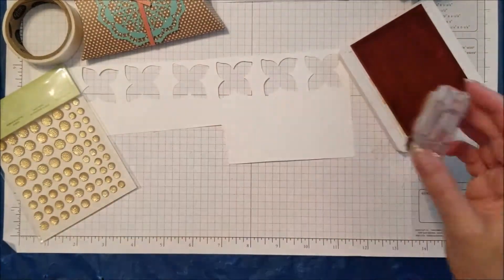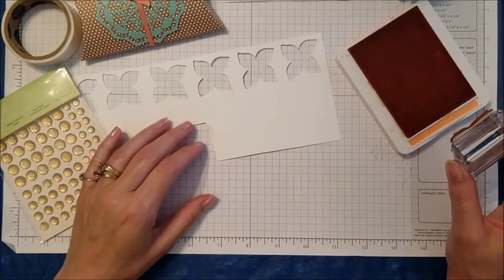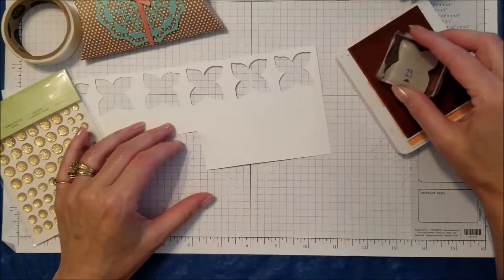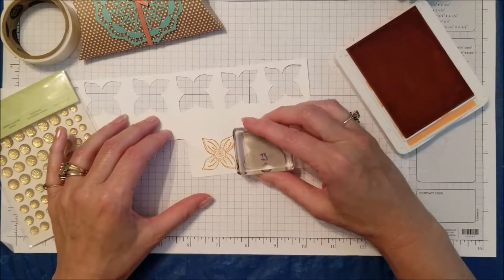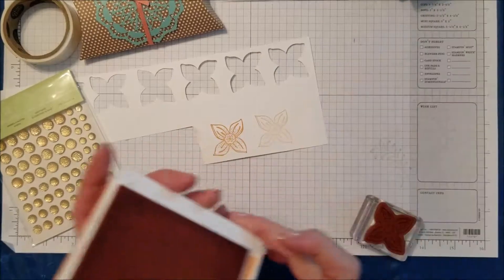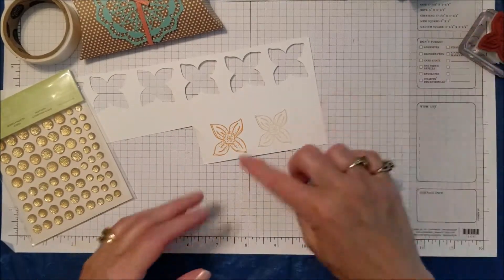I'm going to open up my grapefruit grove and I want my flowers to have a little bit of different color. I'm going to ink it up and stamp it once at full strength and then stamp it again. You can see it just gives it a monochromatic look but it kind of gives it a different shade.